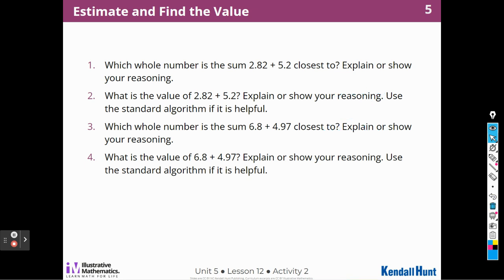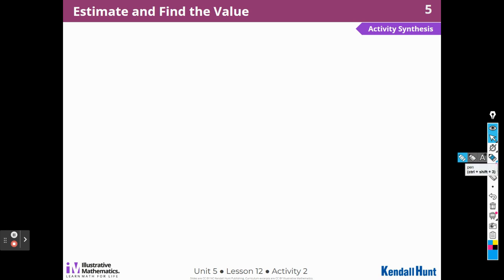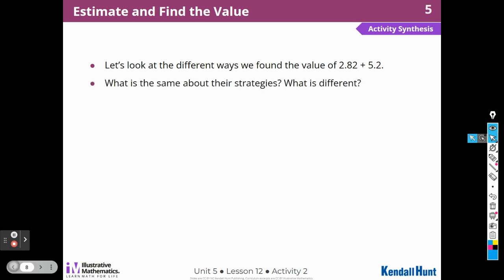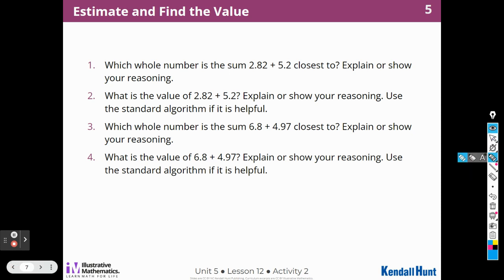Which whole number is the sum 2.82 plus 5.2 closest to? Explain or show your reasoning. So, I think that if I were rounding this to the nearest whole number, this would be close to 3. Remember, in the last lesson, we rounded numbers. So, I would look at the 2, underline the 2, look at the 8, and that's going to push that 2 up to 3. So, it's closer to 3 than it is to 2. And then I would look at the 5. The 2 is going to be closer to 5 than it is to 6. So, I think that my answer should be close to 8.